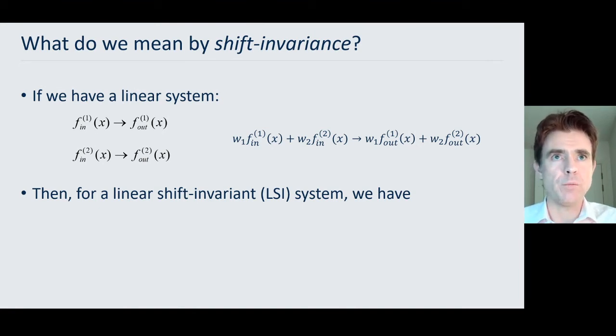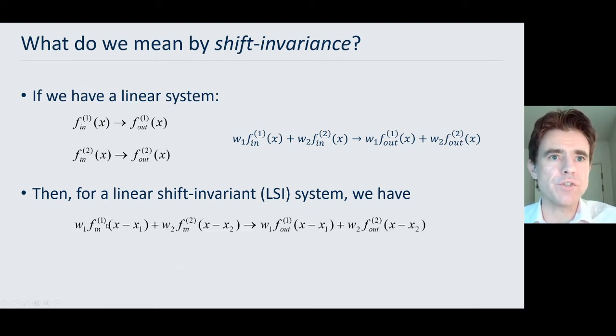Shift invariance is worth mentioning because we will be considering LSI convolution mappings. If we've got a linear system, we could individually weight these two inputs and then the output of the linear system would just be the weighted combination of the individual outputs. But now if we're going to say it's linear shift invariant, the difference now is that this input function weighted by some amount w1, if we were to shift it by an amount x1, then the output would be correspondingly shifted by an amount x1 as well.